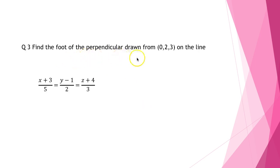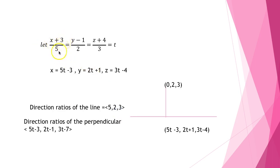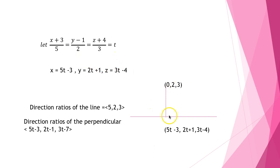Find the foot of the perpendicular drawn from (0, 1, 3) on the line (x+3)/5 = (y−1)/2 = (z+4)/3. Let (x+3)/5 = (y−1)/2 = (z+4)/3 = t, so x = 5t − 3, y = 2t + 1, z = 3t − 4. This gives a general point on the line. The direction ratios of the line are (5, 2, 3), and the direction ratios of the perpendicular from (0, 1, 3) to that point are (5t − 0, 2t − 1, 3t − 7).